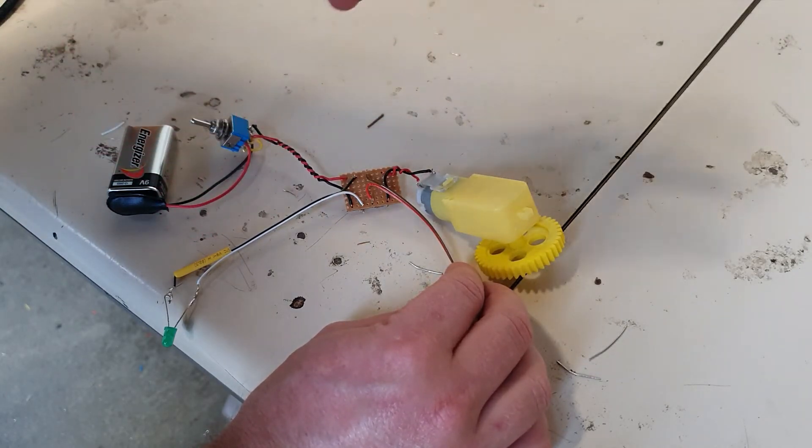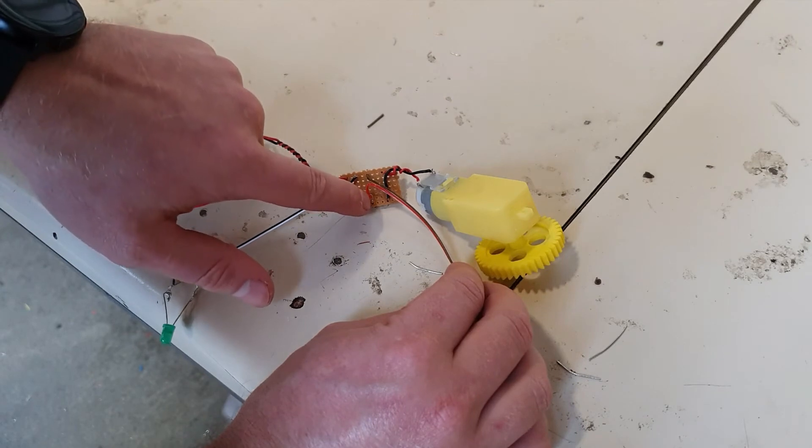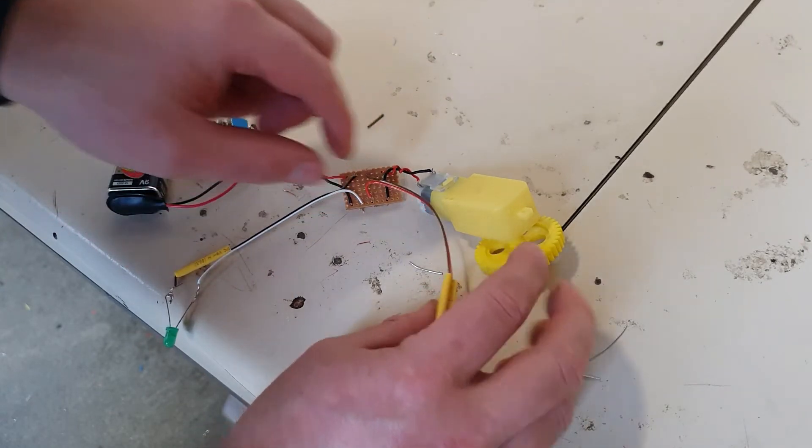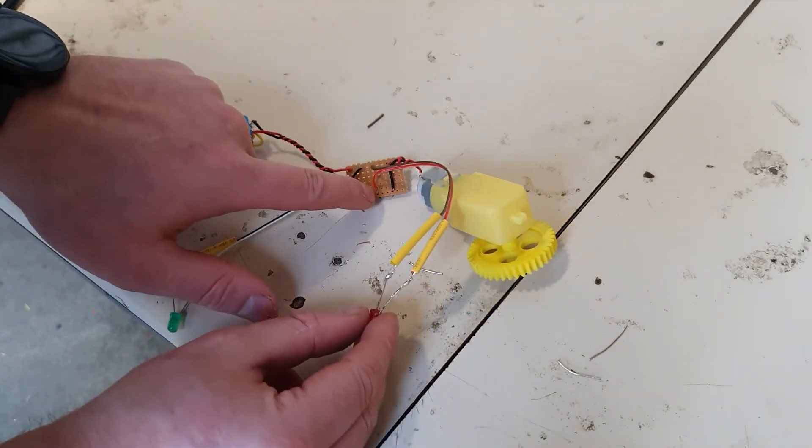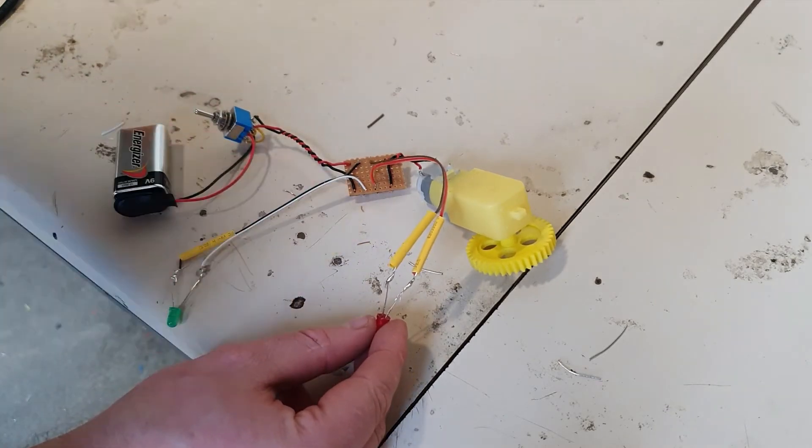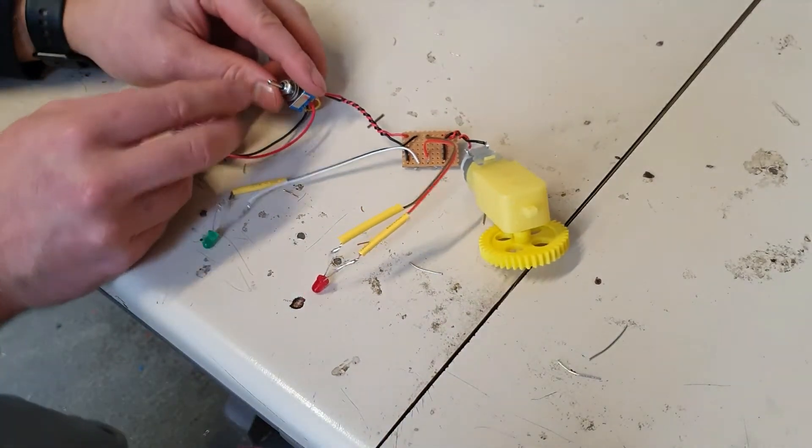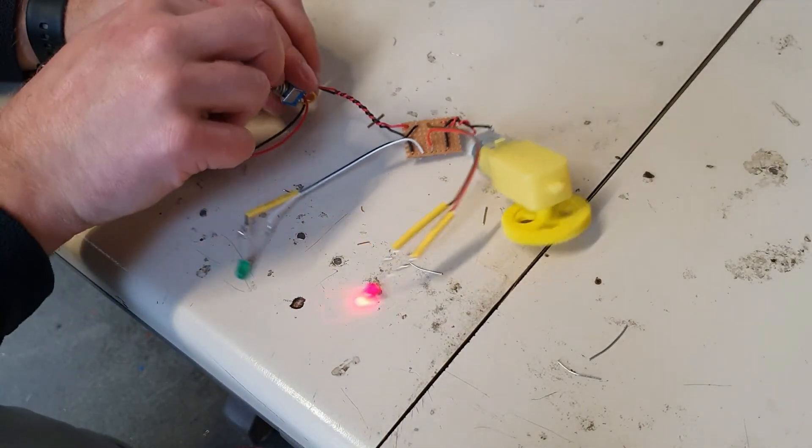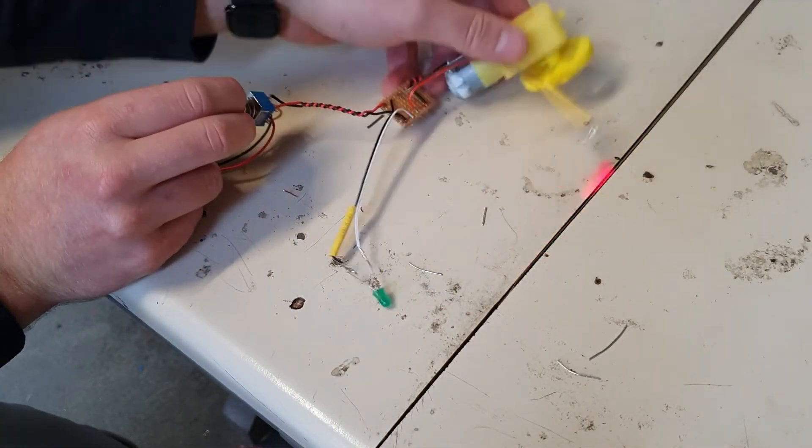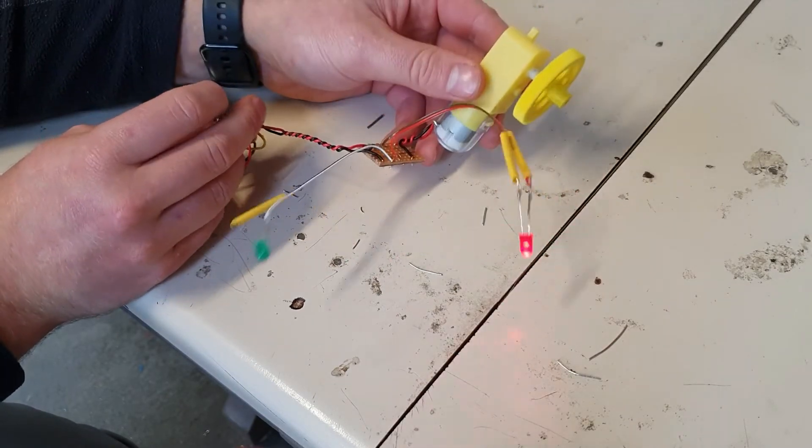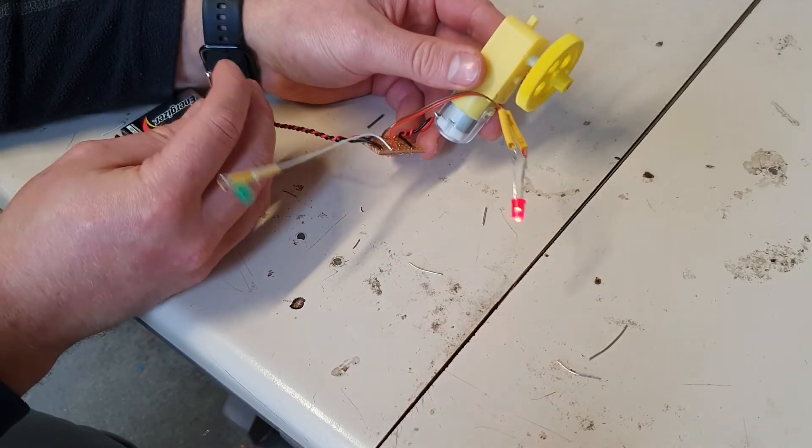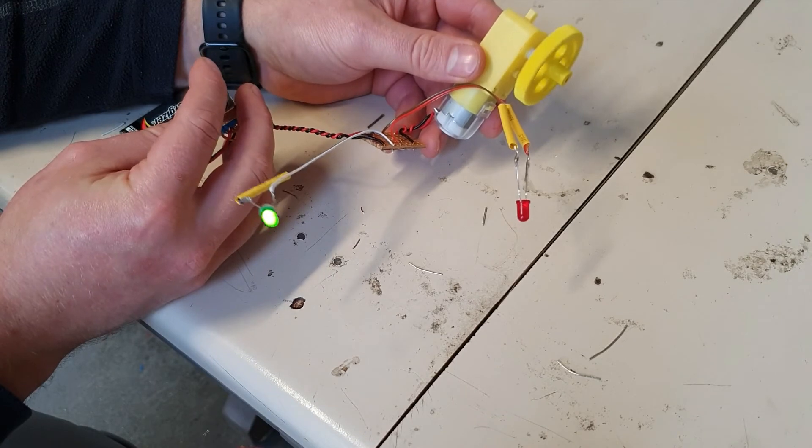If you remember how the double pole double throw switch works, when it goes one direction it directs the current in one way, and when it goes the opposite direction it directs the other way. So what I done is I flipped the polarity of the red LED. Now the positive of the red LED is connected to the black here and vice versa. Let's look at how this circuit works.